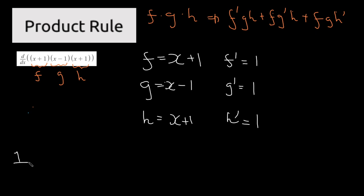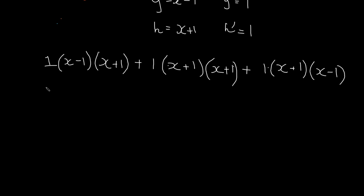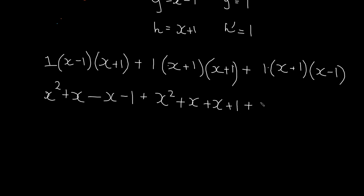Applying the rule: f prime (which is 1) times g (x minus 1) times h (x plus 1), plus g prime (1) times f (x plus 1) times h (x plus 1), plus h prime (1) times f (x plus 1) times g (x minus 1). Now we expand each bracket: the first gives x² plus x minus x minus 1; the second gives x² plus x plus x plus 1; and the third gives x² minus x plus x minus 1.